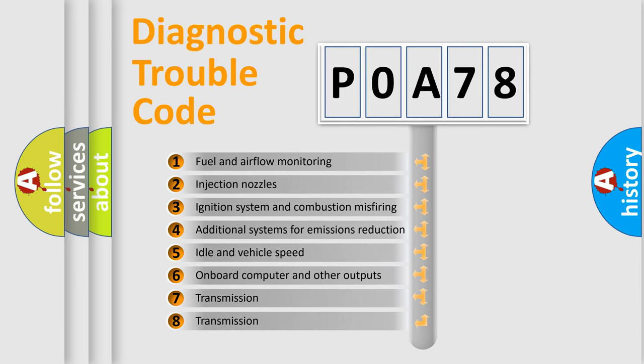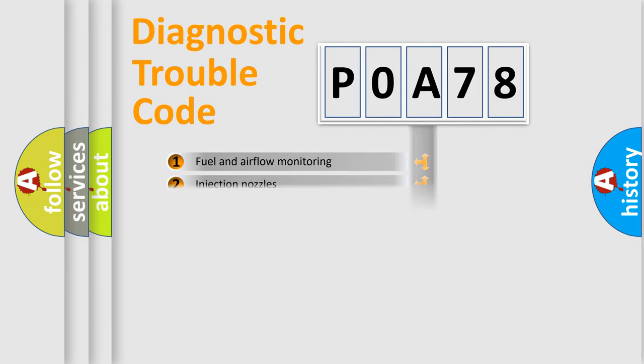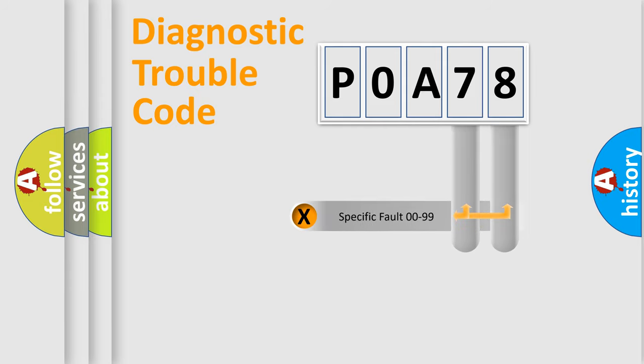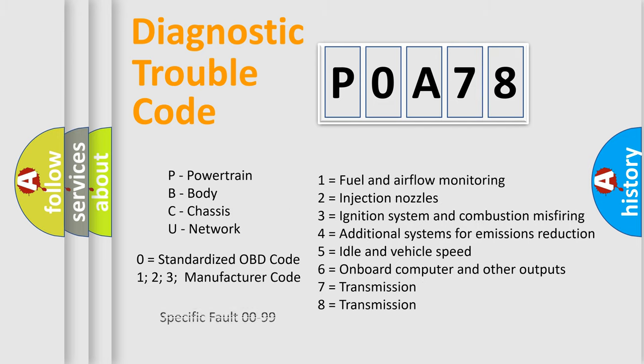The distribution shown is valid only for the standardized DTC code. Only the last two characters define the specific fault of the group. Let's not forget that such a division is valid only if the other character code is expressed by the number zero.